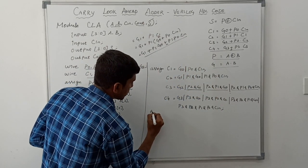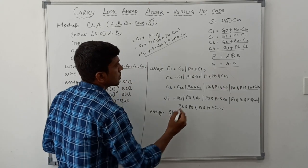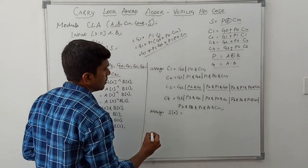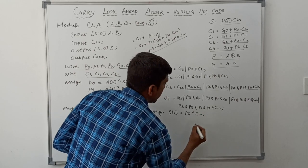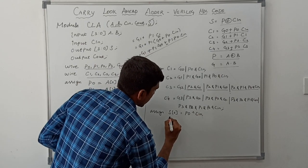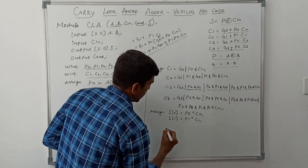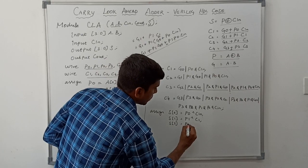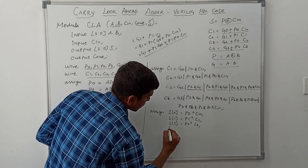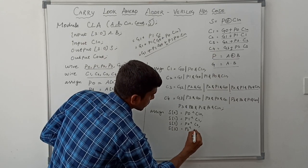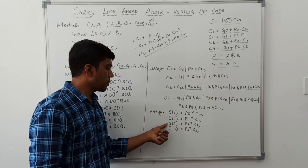Now I find the sum values. The sum formula is P XOR C. So: assign S[0] = P0 ^ Cin; assign S[1] = P1 ^ C1; assign S[2] = P2 ^ C2; assign S[3] = P3 ^ C3. We have found the sum values S0, S1, S2, S3.